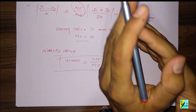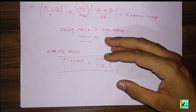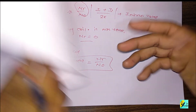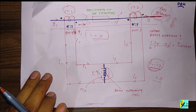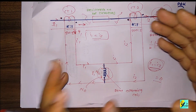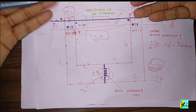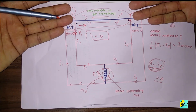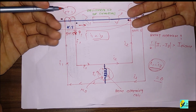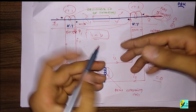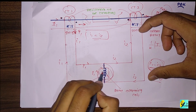This is called a biased relay, or you can say percentage type or slope type relay. The slope is Nr/N0. So if we use simple differential protection, it can mal-operate when there is no fault, or when CTs saturate or are not identical in nature.